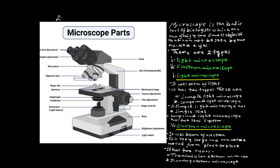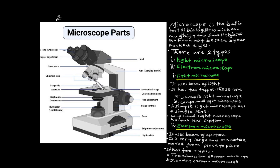The parts of the microscope include: adjustment, nose piece, handle, head, eye piece, arm or carrying handle, objective lens, stage clip, mechanical stage, coarse adjustment, fine adjustment, stage control, and objective lens.